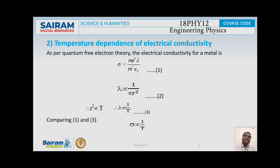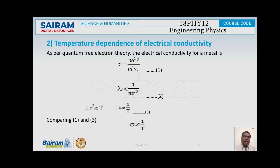Next, I am going to explain the temperature dependence of electrical conductivity. According to classical free electron theory, sigma E is proportional to 1/√T, but experimentally observed data shows sigma E is proportional to 1/T. According to quantum free electron theory, sigma E equals Ne²λ / (M × VF), where VF is Fermi velocity, λ is mean free path, M (or M*) is the rest mass of the electron, and N is the number of electrons per unit volume. Here sigma E is proportional to N as well as λ/VF, while e and M are constant.